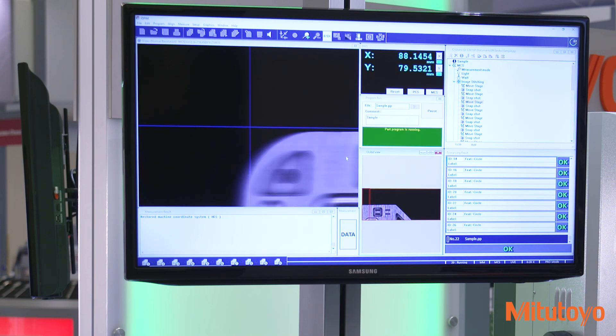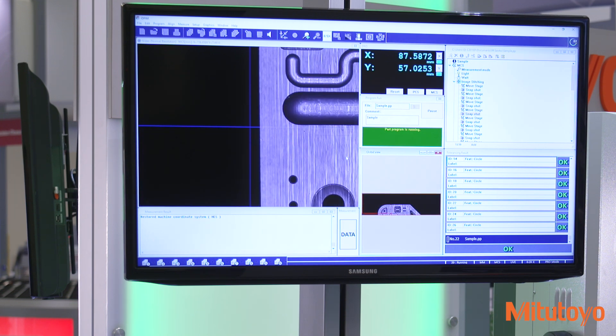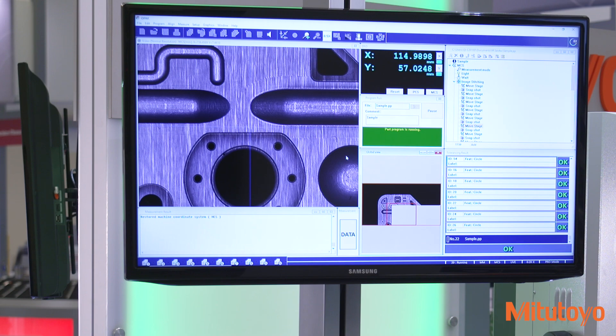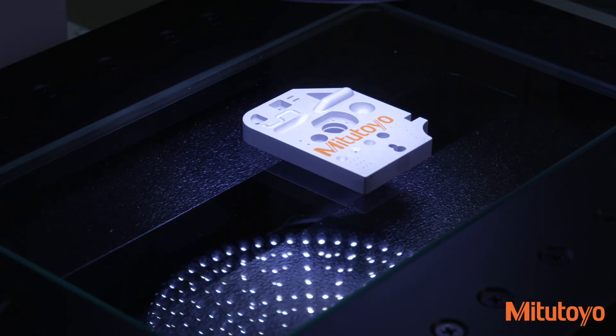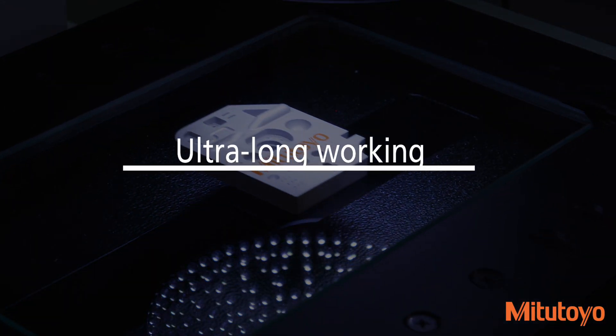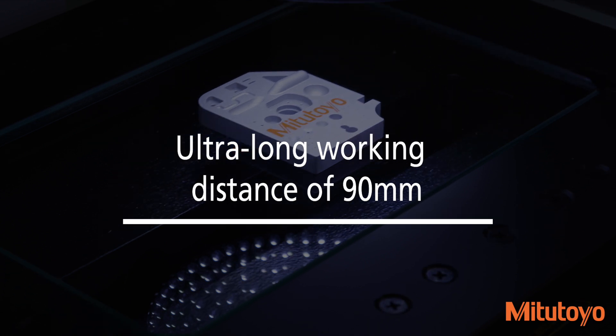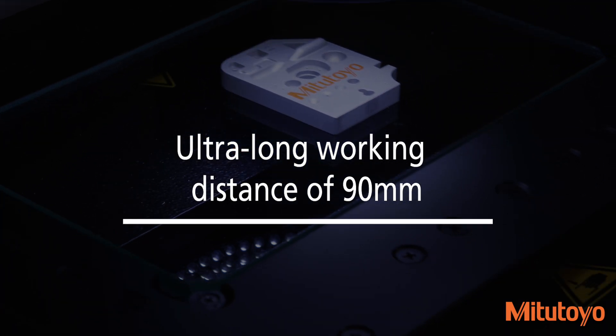The stitching function couples multiple images together, while maintaining high-accuracy measurements that are easily processed without the need to move the stage. An ultra-long working distance of 90 millimeters ensures you can measure without worrying about collisions, even with stepped work pieces.